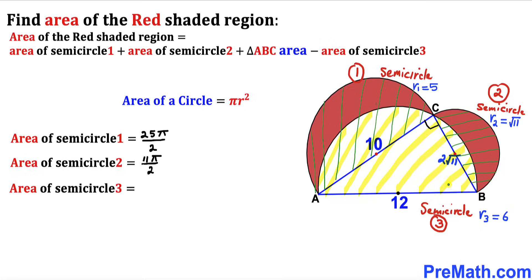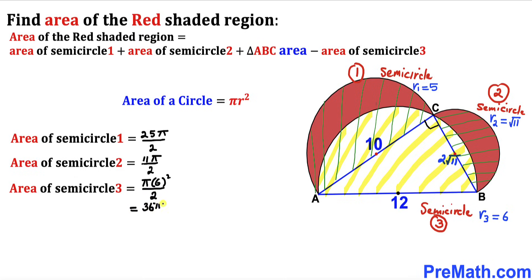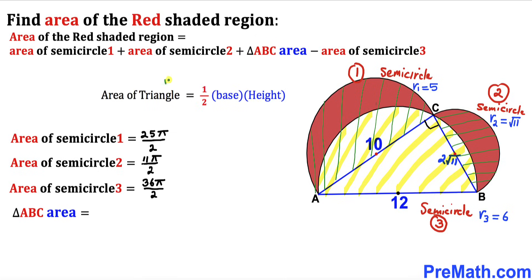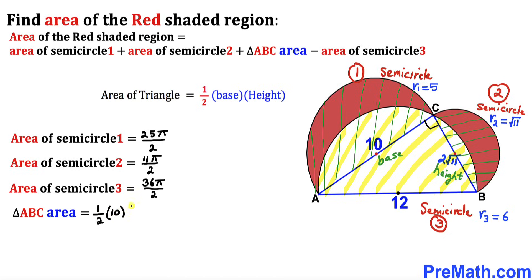For semicircle 3 with radius 6: area equals pi times 6 squared divided by 2, giving 36π over 2. Now for the area of right triangle ABC, using the formula: area equals one half times base times height. Our base is 10 and height is 2 times square root of 11, giving us one half times 10 times 2 times square root of 11, which equals 20 times square root of 11 divided by 2.